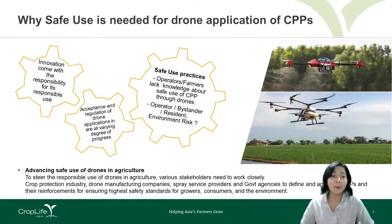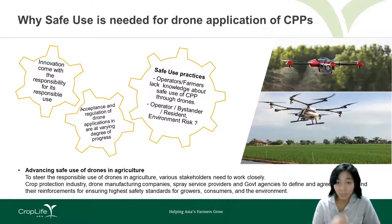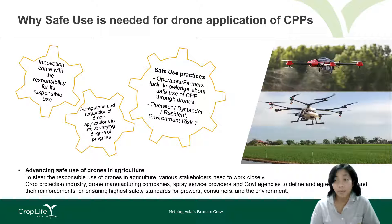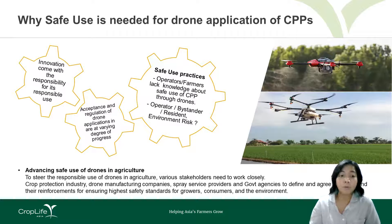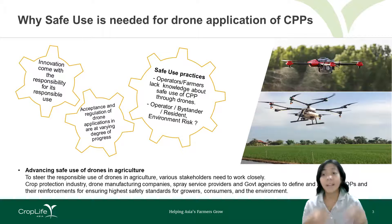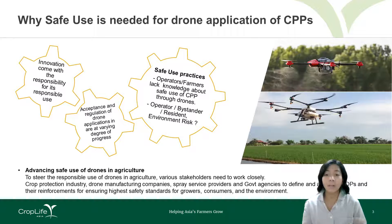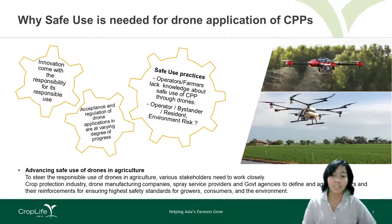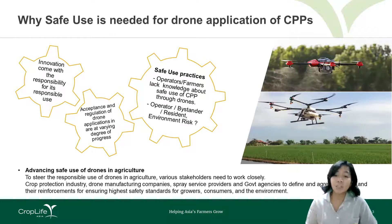We need to think about how to protect everyone linked with drone applications — the operators, the farmers — and consider the environmental impact. To steer responsible use of drones in agriculture, all stakeholders need to work together: the industry, drone manufacturers, and government, to define SOPs, implement them, and reinforce them to ensure the highest safety standards for growers, consumers, and the environment.